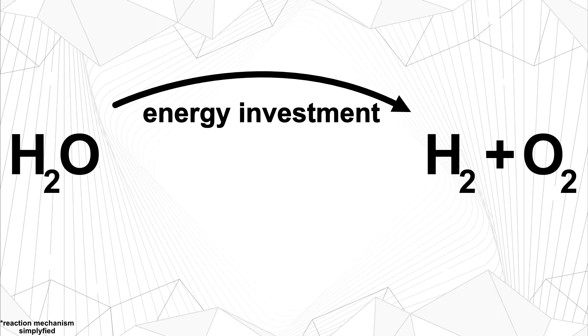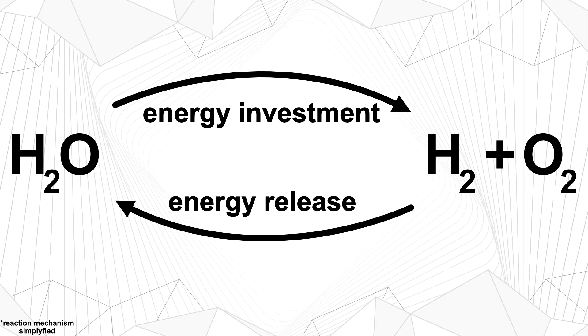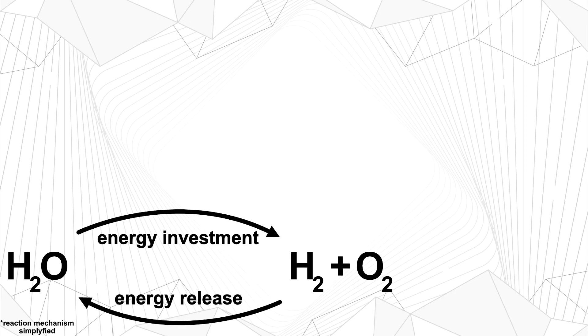Before we move on to e-fuels, let's actually first look at hydrogen as a fuel. We invest energy to produce hydrogen and oxygen gas from water. The hydrogen is then stored in a vehicle. When the vehicle is powered, hydrogen and oxygen react to form water again. If we look at our table, we can see what is going on here. At the beginning, oxygen atoms are reduced. Then we invest energy to transfer electrons onto hydrogen atoms. Finally, by transferring them back onto oxygen, that energy is released again.